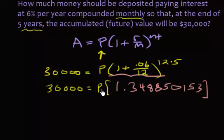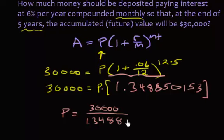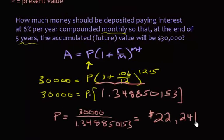So if you're familiar with algebra, what I want to do is solve for P. So I'm going to divide both sides by this long 1.34 and so on. So P is going to be 30,000 divided by that long number, 1.3488501. Let me plug that into my calculator. And I'll get 22,241 dollars and we'll round that to 17 cents.